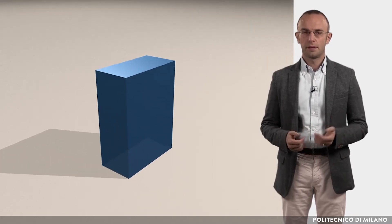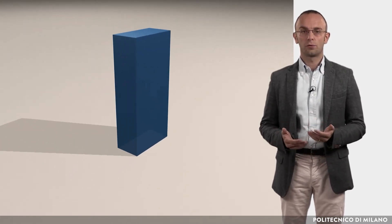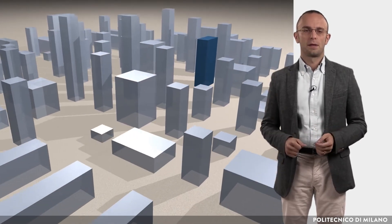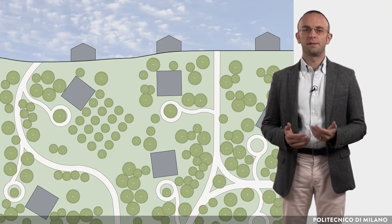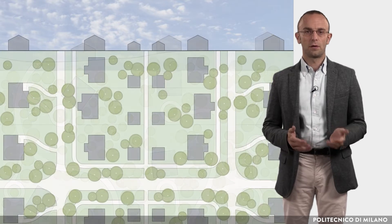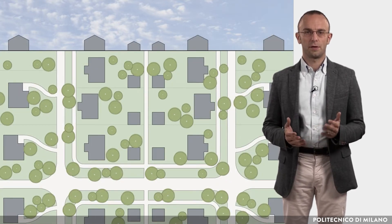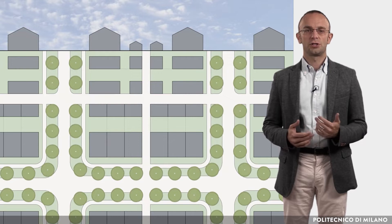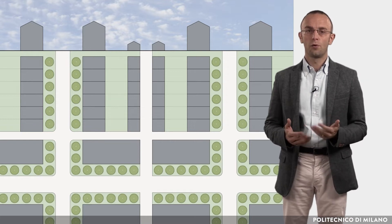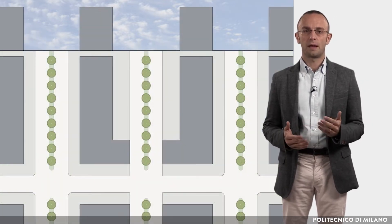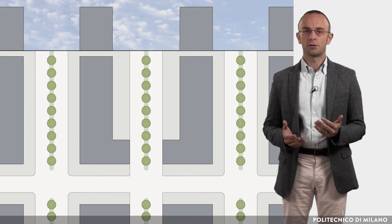The energy efficiency of a building is determined by two factors: how it is designed, built and operated, and the way it is integrated into the urban layout, which can be defined as site planning. To reduce its energy consumption and be sustainable, a building must be designed and realized using shapes, technologies and materials most appropriate to the specific context. To achieve a successful integration of the building in a certain context, it is necessary to know the local urban layout and the expected interaction between climatic factors and urban shape. In this module we will analyze such topics.